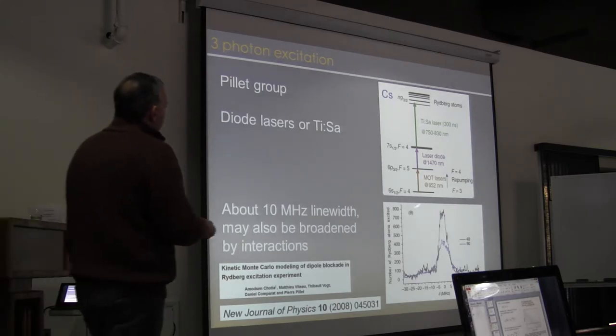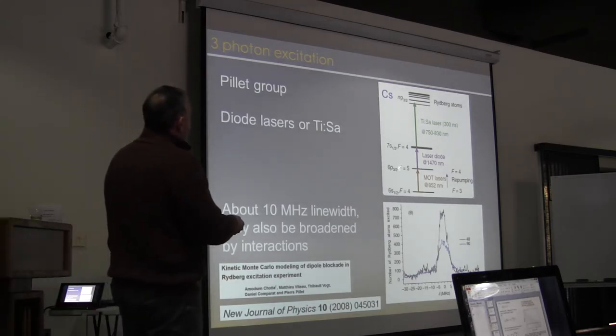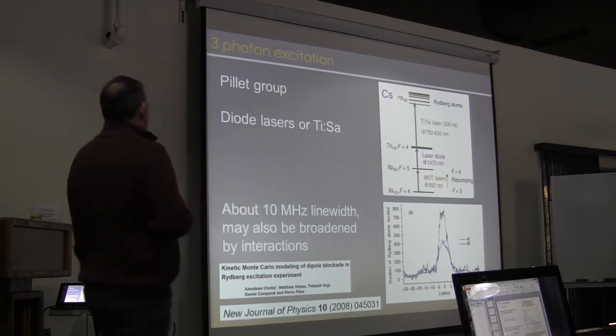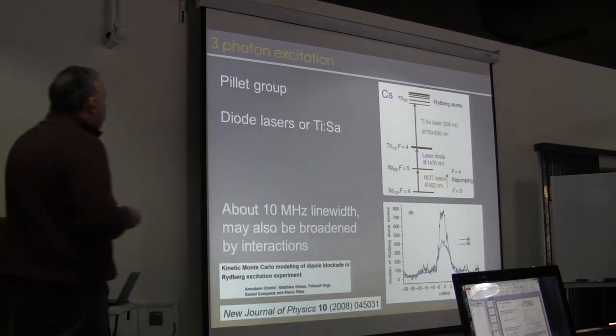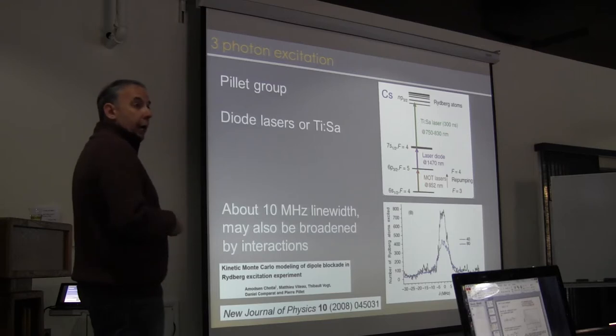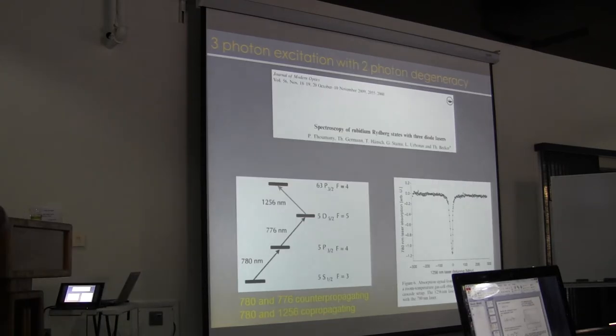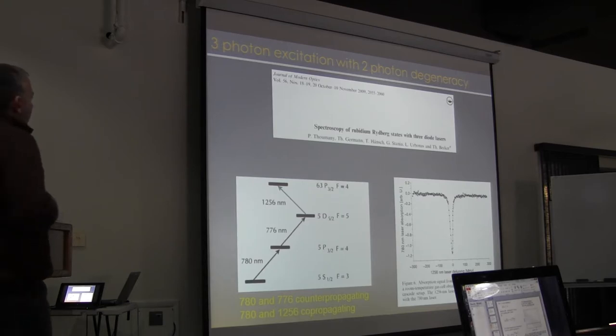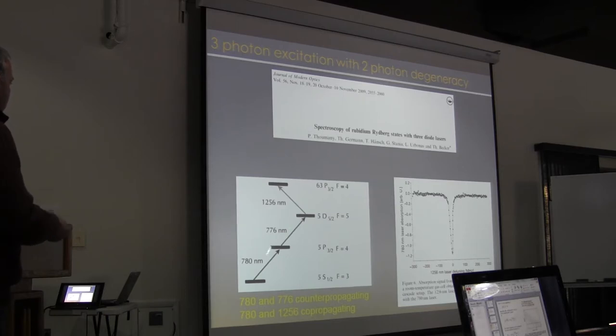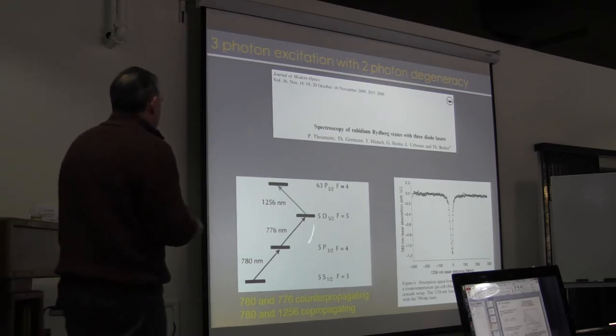So an example of an experiment from Pierre Pillet's group in cesium, they used a diode laser at 852 nanometers to go up to the first resonance level, an infrared laser diode to go up to a 7S state, and then a near-infrared Ti:Sapphire laser to go up to the Rydberg states. And for this experiment, they observed about 10 MHz linewidth, and this was substantially broadened by interactions in this case. You can also do three-photon excitation with two-photon degeneracy. An example of that is these two degenerate or near-degenerate photons taking up to a D state and then an IR photon up to the P state. Again, this was rubidium.